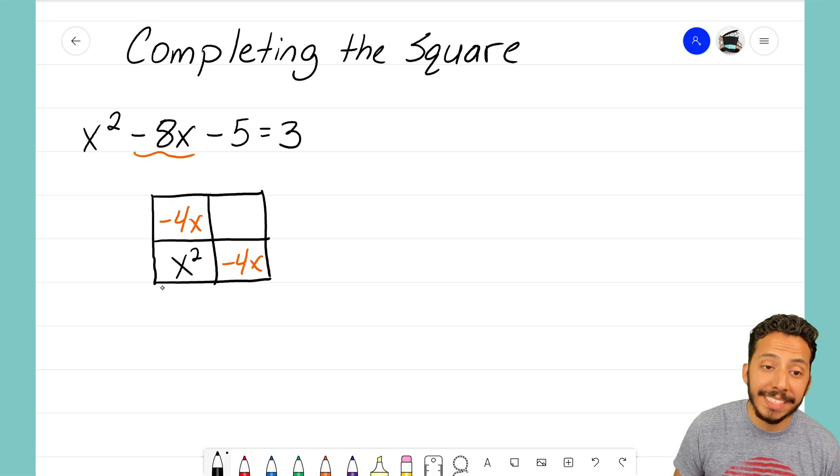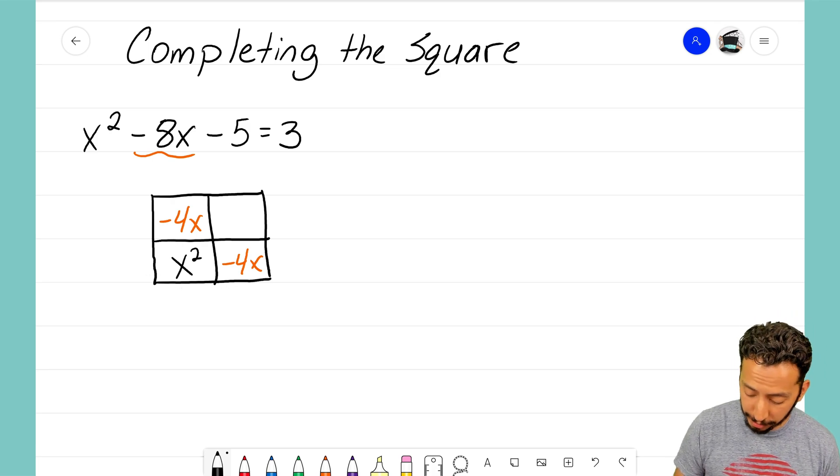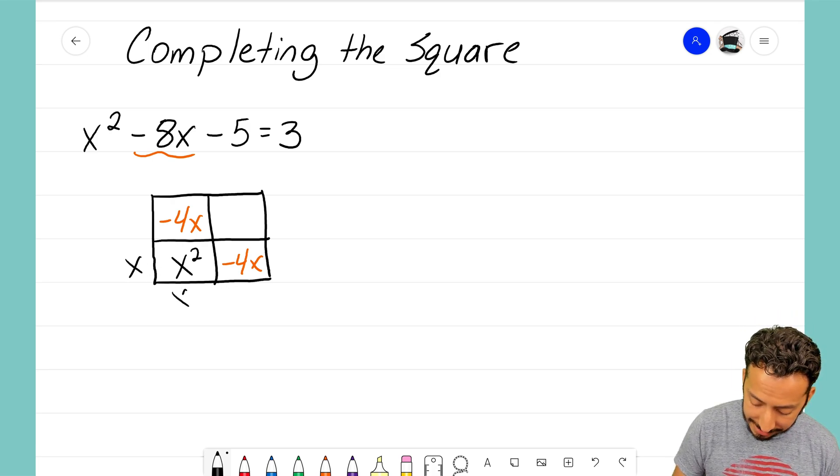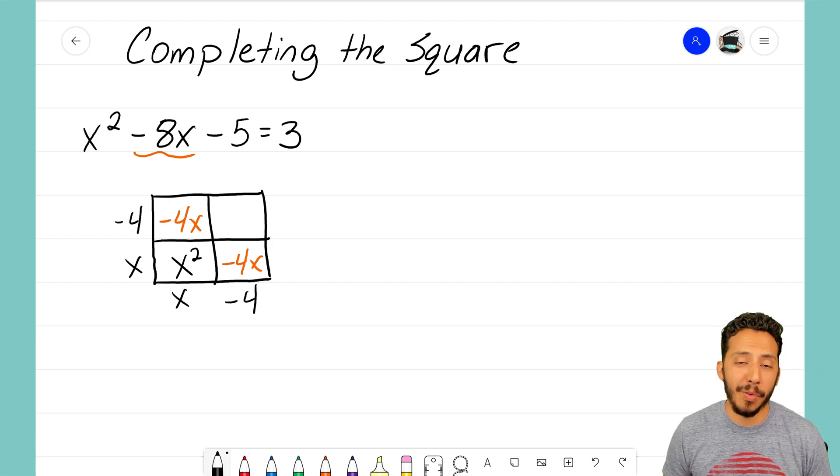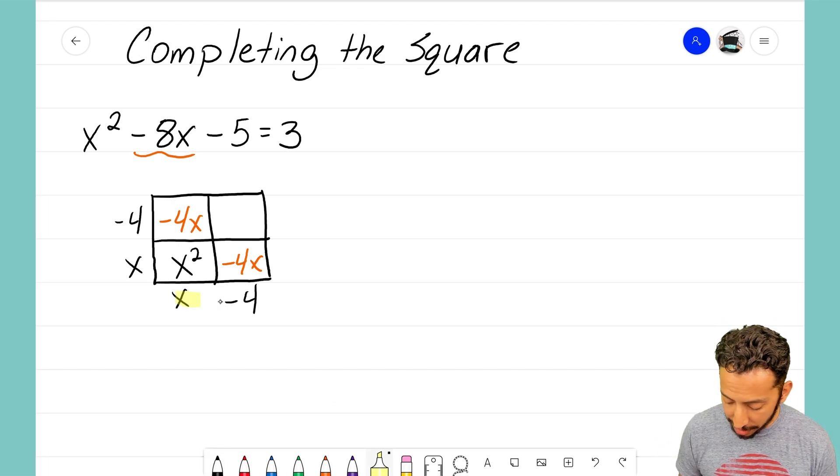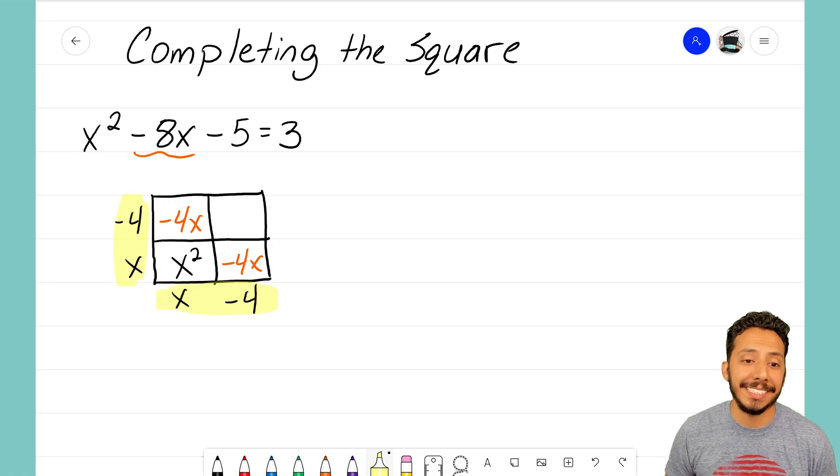And now when I go ahead and write the sides of my generic rectangle, I know I'll have x and x, and I'm going to have negative 4 and negative 4, which is so important for us because we're trying to make a square. And for this to be a square, that means that these sides here do have to be exactly the same. They need to be equal.